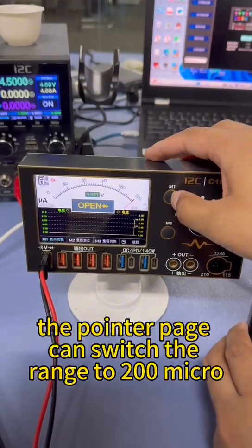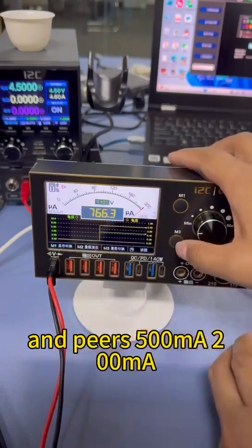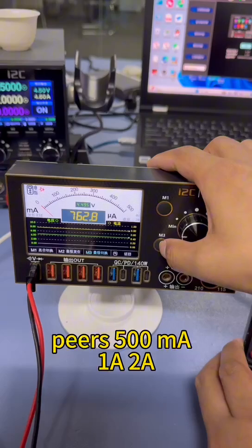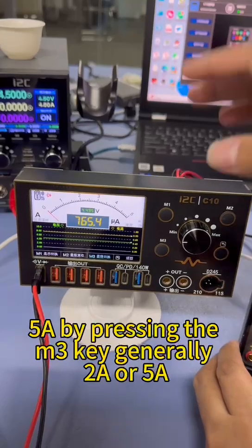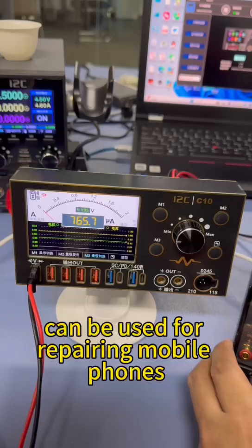The pointer page can switch the range to 200 microamperes, 500 microamperes, 200mA, 500mA, 1A, 2A, and 5A. By pressing the M3 key, generally 2A or 5A can be used for repairing mobile phones.